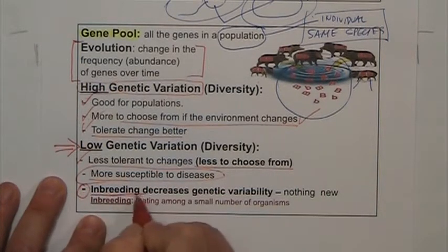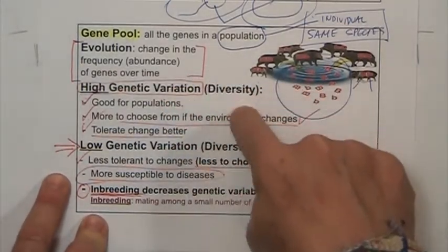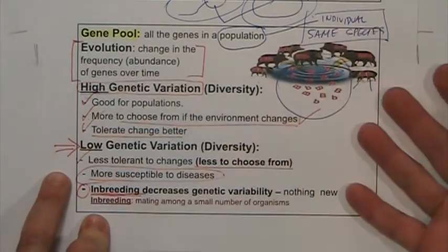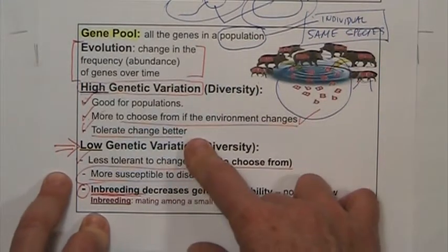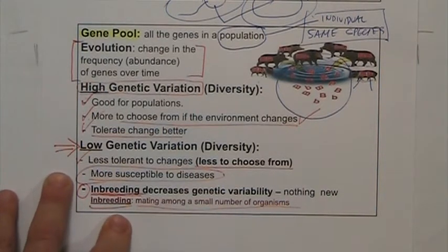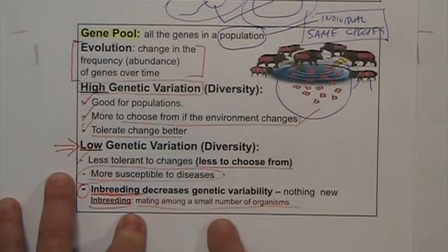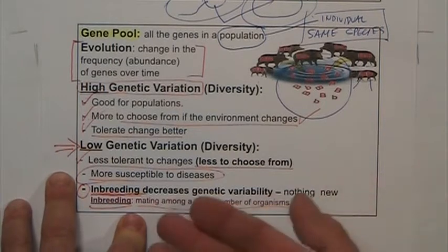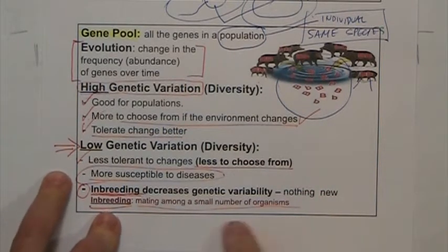Let's introduce inbreeding. Inbreeding is when you mate with close relatives, or a very small group of individuals. Imagine that you live in a small town of 200 people and everybody reproduces within that town — nobody leaves or comes in. Over many generations, everybody ends up being related. That is inbreeding — mating among a small group of organisms. When you mate within a very small group, you are just rehashing the same genes, and there is very little new to add. Even the new combinations tend to repeat because there is nothing new. Inbreeding creates low genetic diversity.